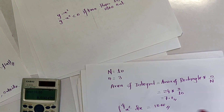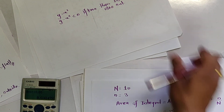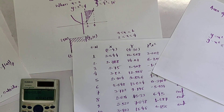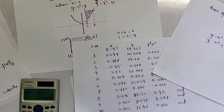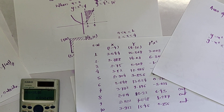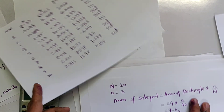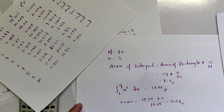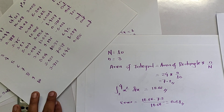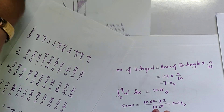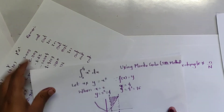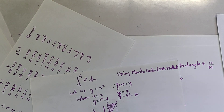The error will be minimized if we take up to 20 or 15 iterations or random number generations. In this way, we have found the value of the integral by using the SRK method of Monte Carlo simulation. Thank you and bye-bye.